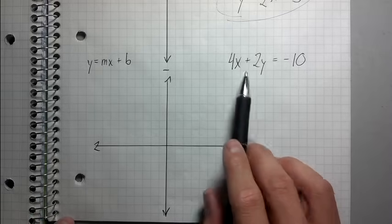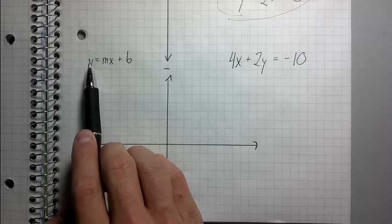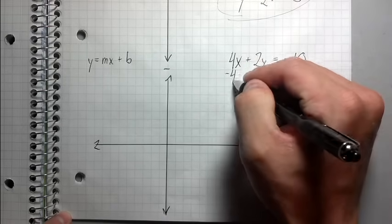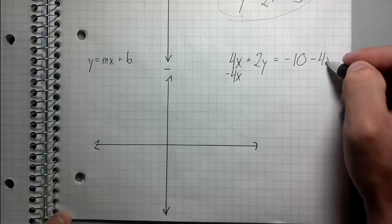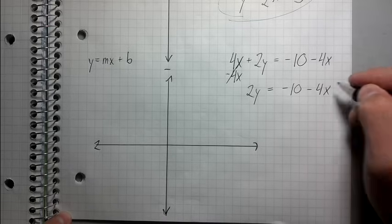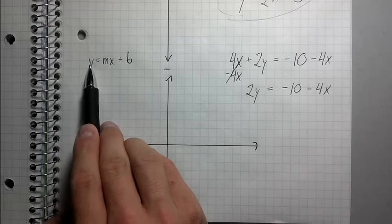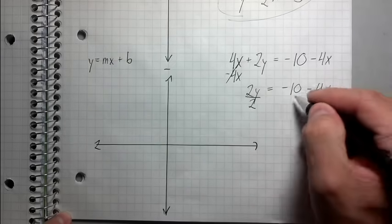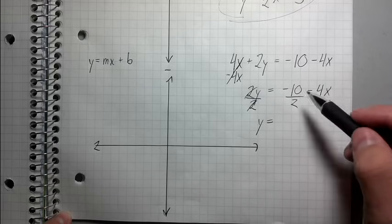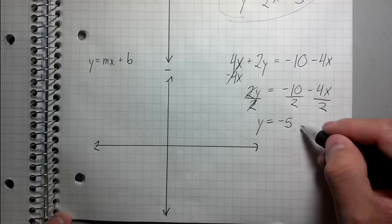What's the first step to get this into slope-intercept form? We're basically trying to get y by itself — solve for y. In order to get y by itself, I need to get rid of this 4x, so I'm going to subtract 4x from both sides. This crosses off, so my new equation looks like 2y equals negative 10 minus 4x. Now I still have to get rid of this positive 2, because in slope-intercept form I just have a single y — no number multiplying the y. So I divide both sides by 2. This gives me y equals negative 5 minus 2x.